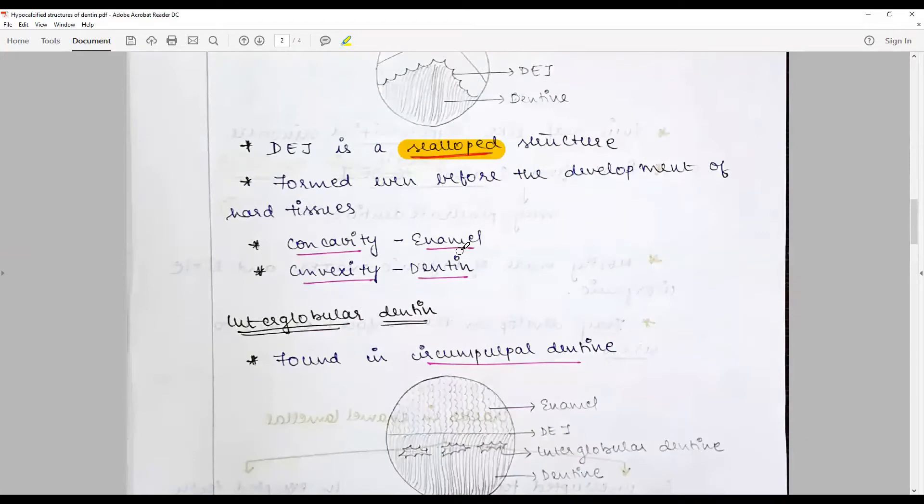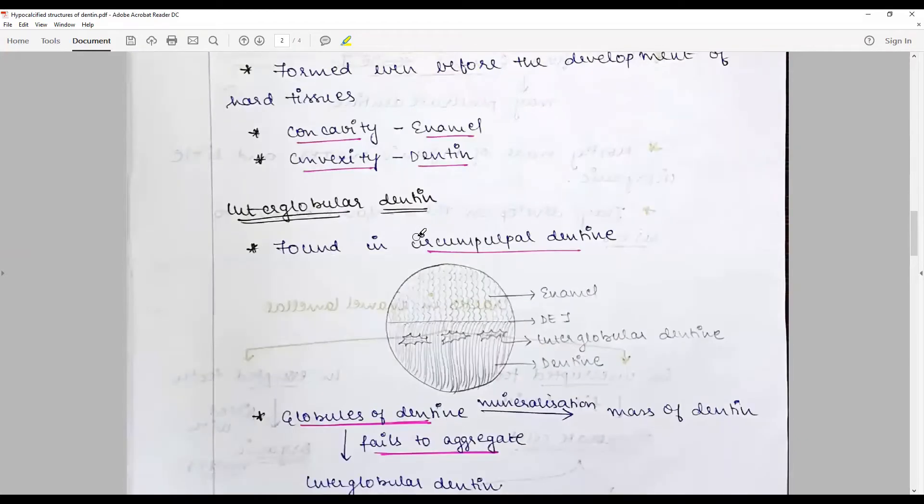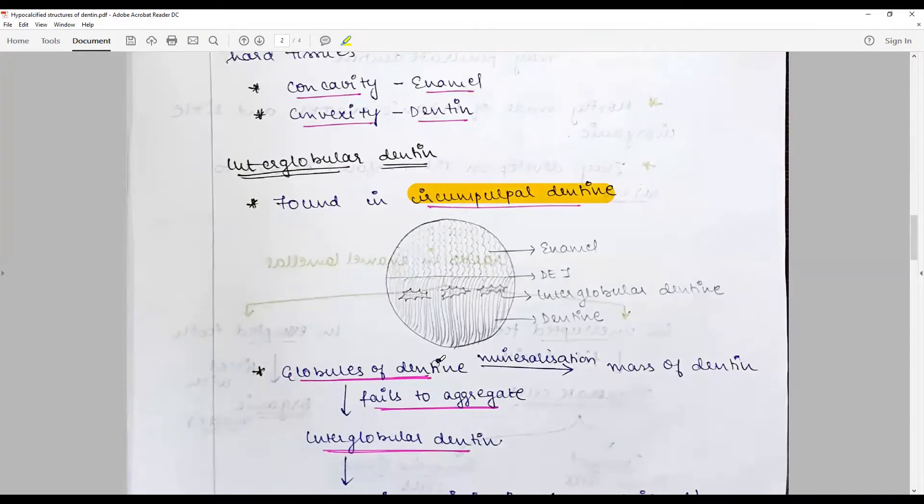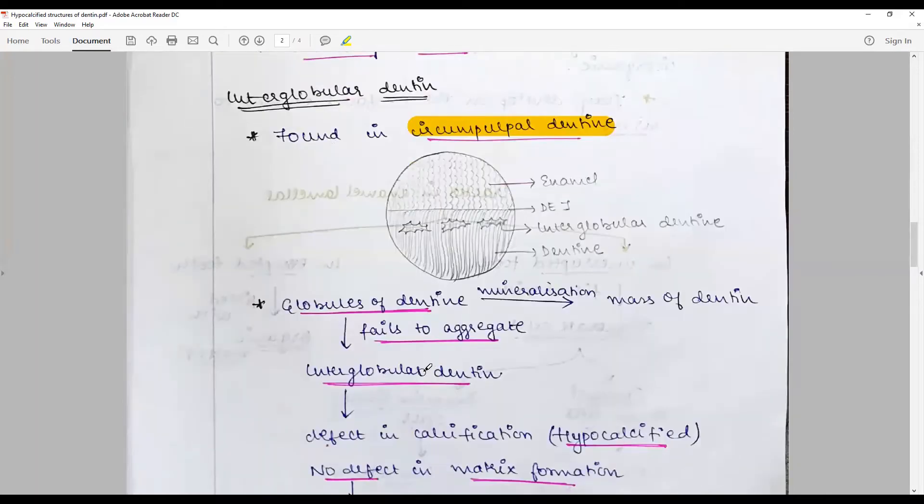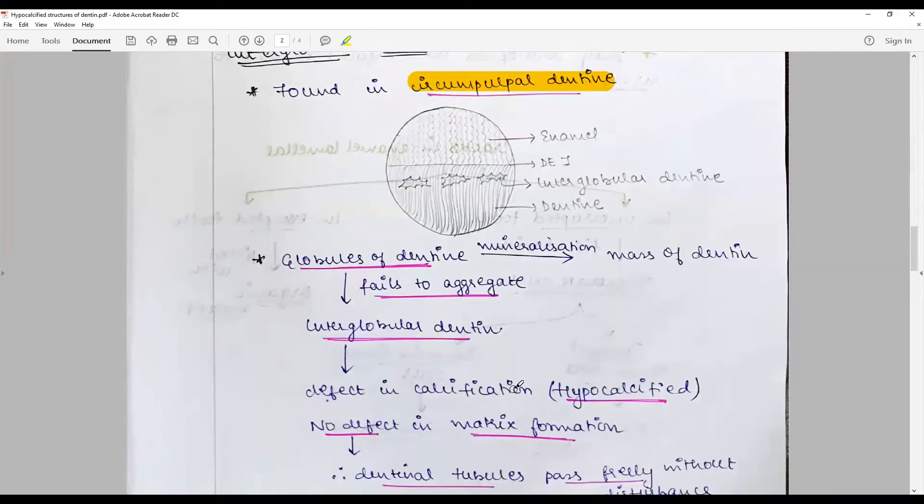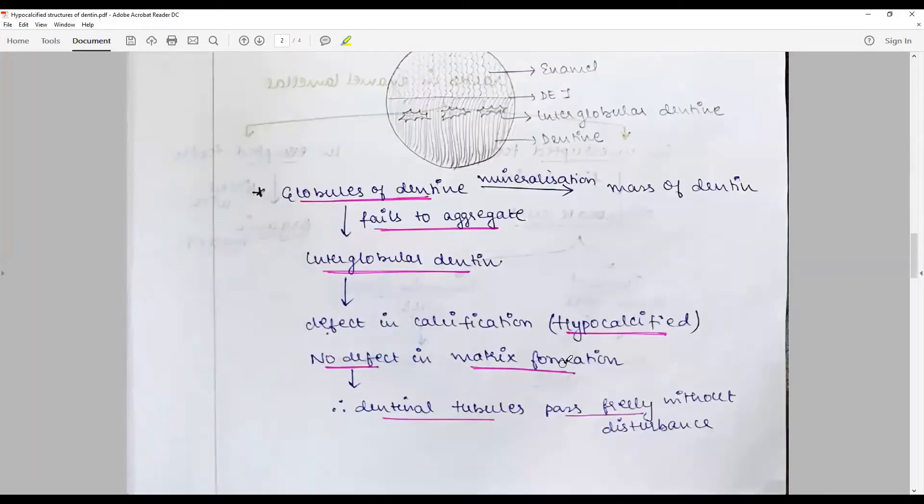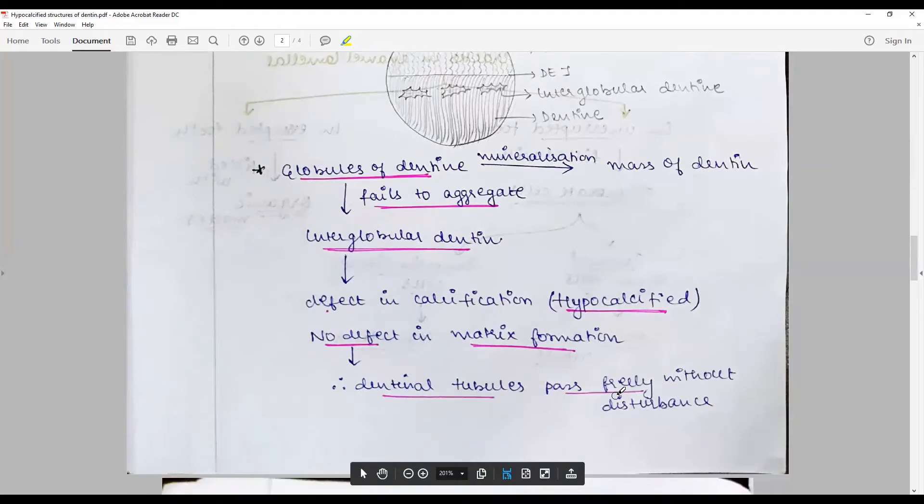The interglobular dentin found along the circumpulpal dentin are globules of dentin where in heterogeneous calcifications these areas fail to aggregate. That bat-shaped area is called the interglobular dentin and it is hypocalcified. There is no defect in matrix formation but calcification, hence dentinal tubules pass freely without disturbance in this area and they are seen as dark bat-shaped areas.